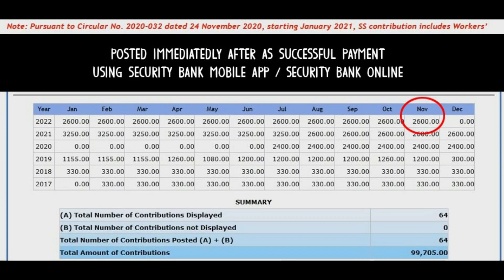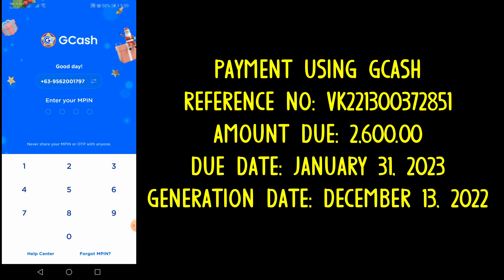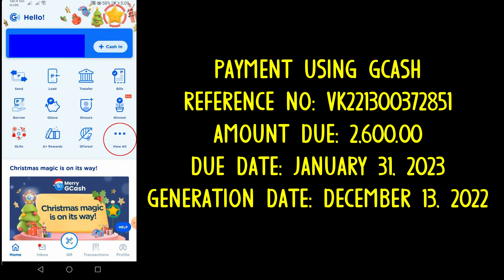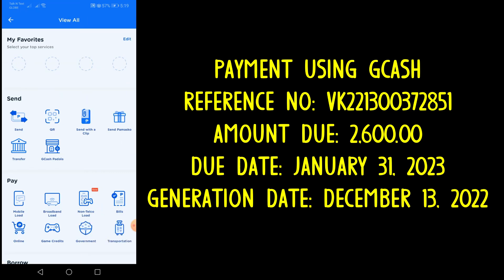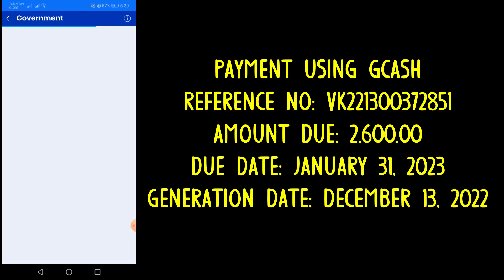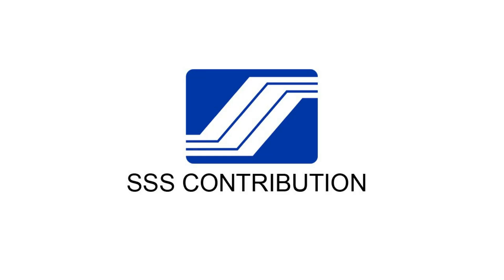Let's start paying using GCash. Login to your GCash. Click View All, then find and click the government logo. Then look for the SSS Contributions logo.